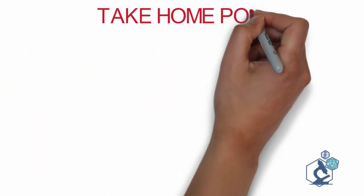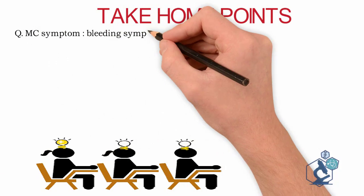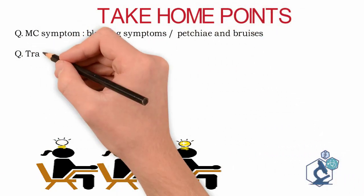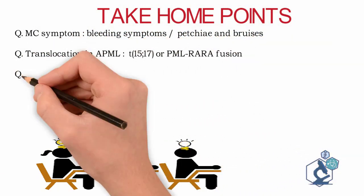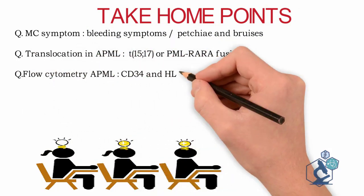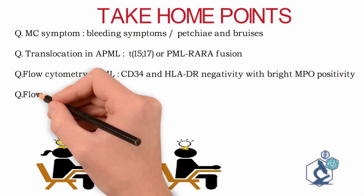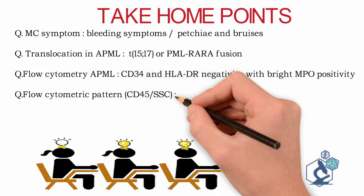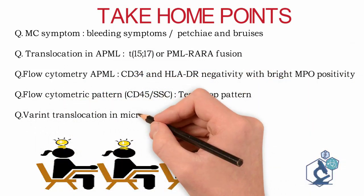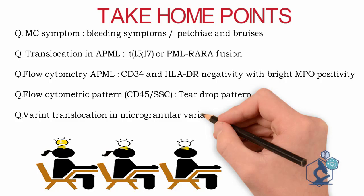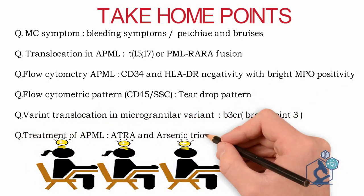Take-home points: The most common symptom is bleeding. PML-RARA is the characteristic translocation. Flow cytometry plots show CD34 and HLA-DR negativity with bright MPO positivity. A teardrop pattern is seen on CD45 side-scatter plots. The microgranular variant shows breakpoint cluster 3 translocation. ATRA and arsenic trioxide form the mainstay of treatment.